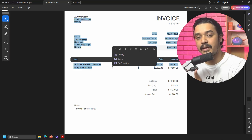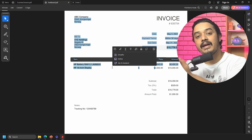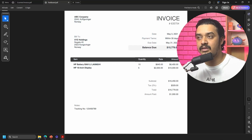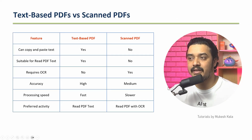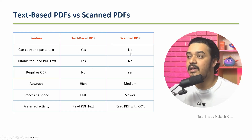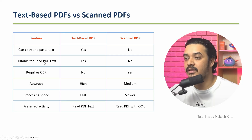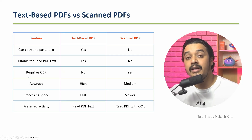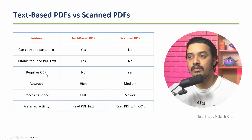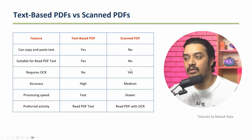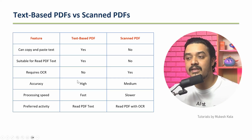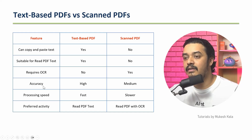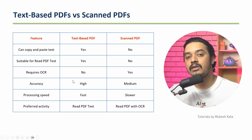Why does this matter? Depending on the kind of PDF, you will use different activities in UiPath. A quick comparison: with a text-based PDF you can copy and paste text — you use the Read PDF Text activity. With a scanned PDF you cannot copy text, so you need OCR (Optical Character Recognition) to read it. Accuracy for text-based PDFs is always high; for scanned PDFs it is medium or low because we rely on an OCR engine.